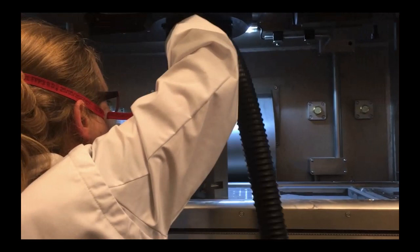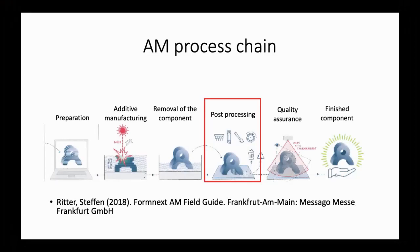After the manufacturing step, AM procedure parts enter the final phase of production. Most post-processing procedure include support removal, heat treatment, surface finishing, possibly conventional machining, and finally cleaning.